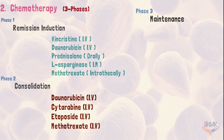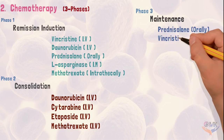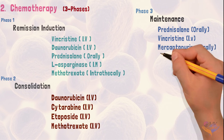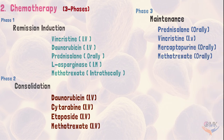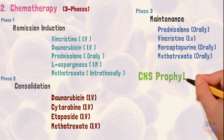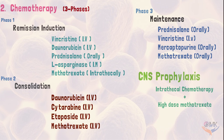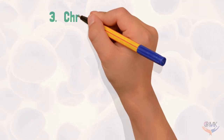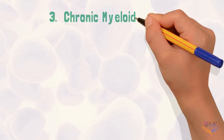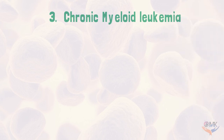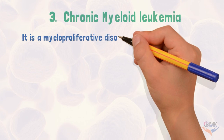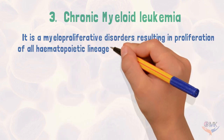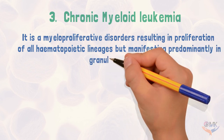The third phase is the maintenance phase, where prednisolone, vincristine, mercaptopurine, and methotrexate are given. For CNS prophylaxis, intrathecal chemotherapy is done with high-dose methotrexate. When patients do not respond to chemotherapy, bone marrow transplant is the last option. Moving on to the third type of leukemia, chronic myeloid leukemia, it is a myeloproliferative disorder resulting in proliferation of all hematopoietic lineages, but manifesting predominantly in the granulocyte series.